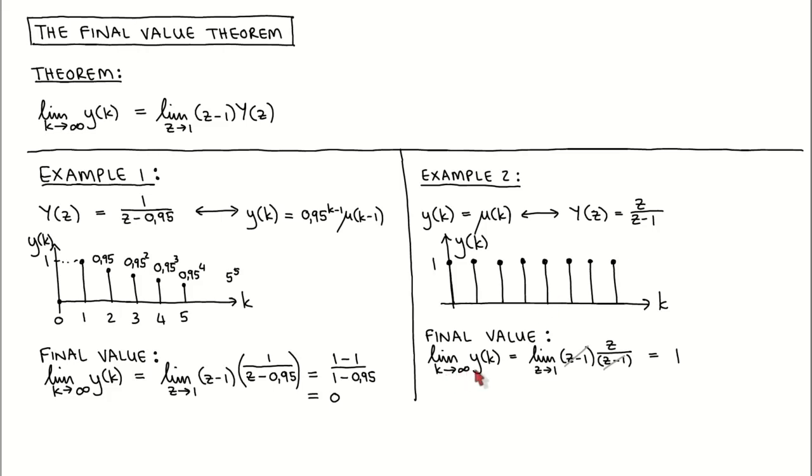According to the final value theorem, the steady state value of the signal is equal to the limit as Z tends to 1 of Z minus 1 times the Z-transform of the signal, which we read off from the Z-transform tables. Since Z minus 1 cancel, we are left with the limit as Z tends to 1 of Z, which is equal to 1 as expected.